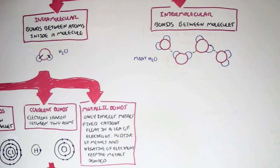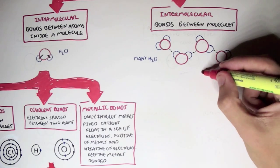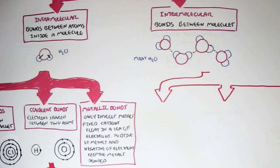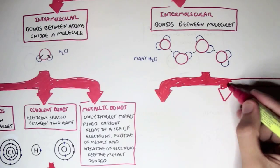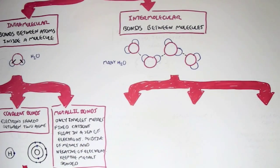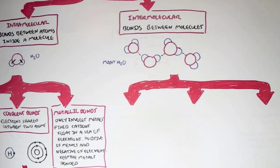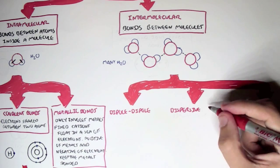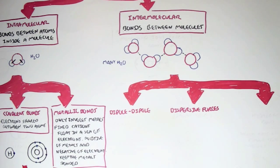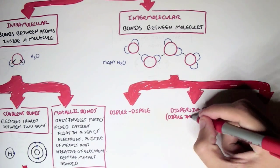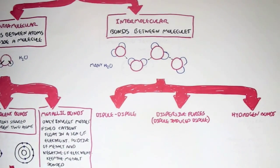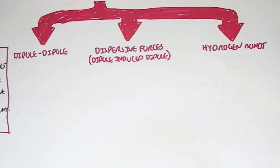Now let's look at intermolecular bonds — the bonds between molecules. There are three main types: dipole-to-dipole forces, dispersive forces (also known as dipole-induced dipole or London forces), and hydrogen bonds. They are all relatively similar in some ways.